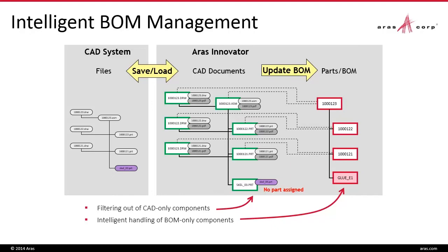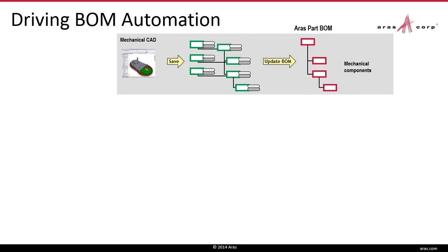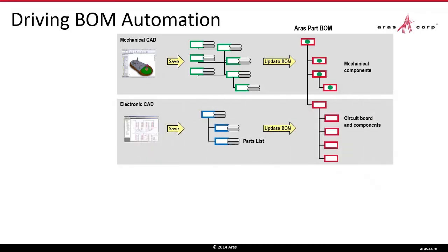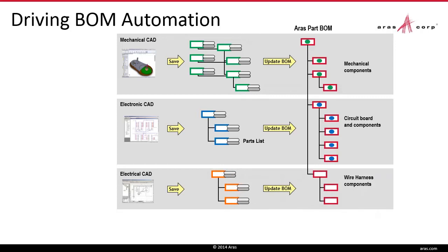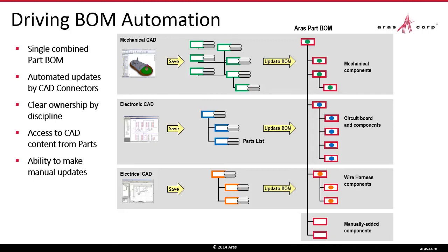With intelligent BOM management, we can drive BOM automation across multiple CAD disciplines. For mechanical CAD, we save the CAD document structures and then update the bill of materials based on the CAD structure, providing mechanical components tracked by special properties. For electronic CAD, we save the design into CAD documents and update the bill of materials based on the electronics parts list, providing the circuit board and components into the unified part BOM. With electrical CAD, we save the design and update the bill of materials for the appropriate wire harness components. We can also provide manually added components such as paint or glue. Thus, we have a single combined part BOM with automated updates by the CAD connectors, clear ownership by discipline, access to CAD content from the parts, and the ability to make manual updates.